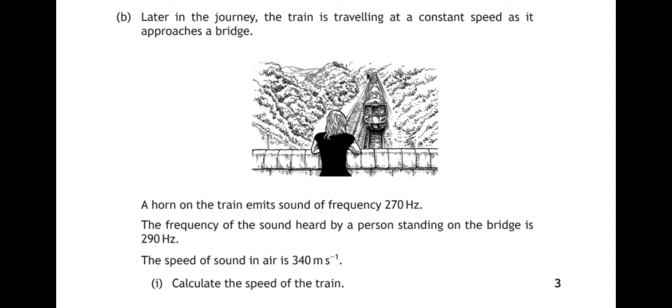Part B. Later in the journey, the train is traveling at a constant speed as it approaches a bridge. A horn on the train emits a sound of frequency 270 hertz. The frequency of the sound heard by a person standing on the bridge is 290 hertz. The speed of sound in air is 340 meters per second. Part B1, calculate the speed of the train.